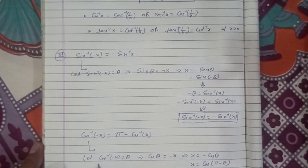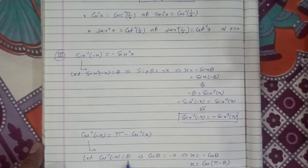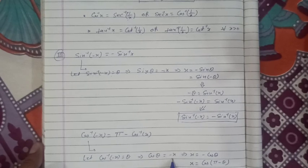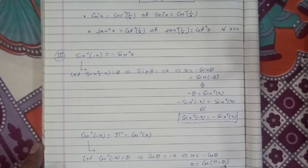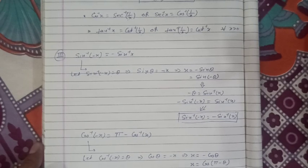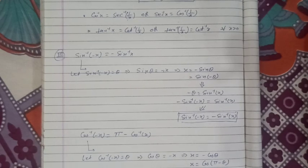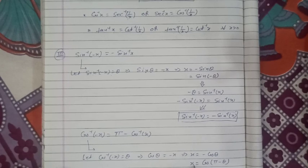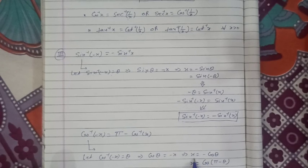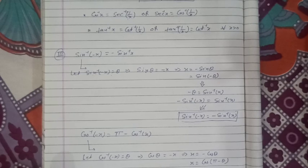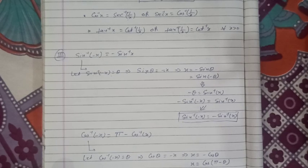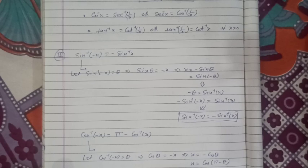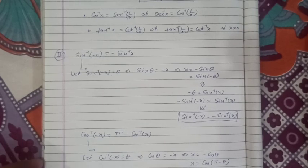For cosine: cos inverse(−x) = π − cos inverse x. To prove: let cos inverse(−x) = θ, so cos θ = −x, meaning x = −cos θ. We know that −cos θ = cos(π − θ), so x = cos(π − θ), giving cos inverse x = π − θ. Since θ = cos inverse(−x), substituting: cos inverse x = π − cos inverse(−x). Transposing: cos inverse(−x) = π − cos inverse x.